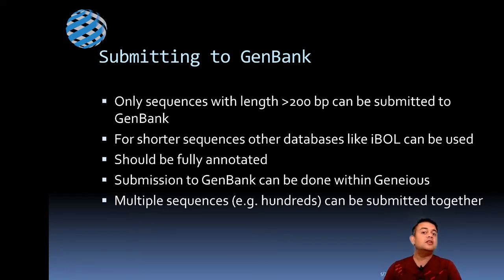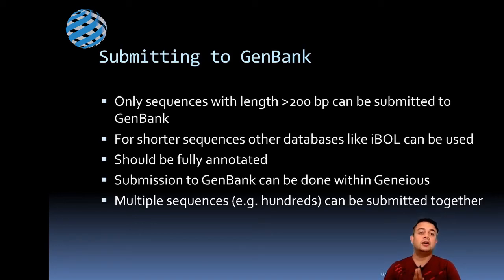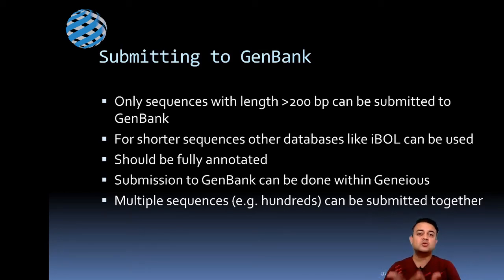Sequences must be fully annotated before submitting — I re-emphasize this point. If you submit without proper annotation tracks, there is no way to batch-update it; you have to email GenBank, which eats up a lot of your productive time. Submission to GenBank can be done within Geneious, which is very powerful. Hundreds of sequences can be submitted together, but don't abuse this option by submitting poor-quality sequences. Unless a sequence is completely annotated, it is rarely of use to anyone.